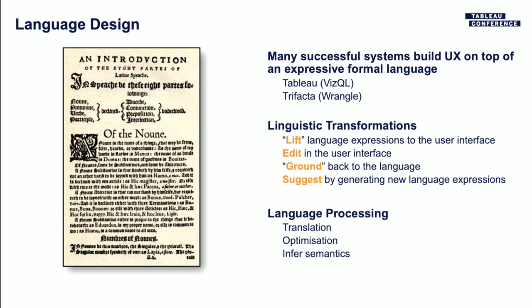The reason this is so powerful is that you can do a number of transformations between the language and the user interface. There's an operation called lifting where you take expressions in the language and convert them into elements of the interface — in Tableau you have pills and shelves that correspond closely to things in the underlying language. Once the language is translated into the user interface, the user can manipulate it and you translate it back down into that formal language. But one of the really powerful things you can do with a formal language is use its rules to determine a list of changes you can make to a statement — that allows you to drive a suggestion system.